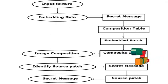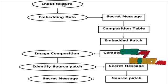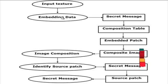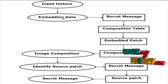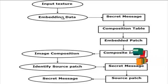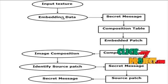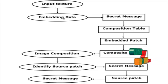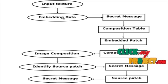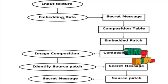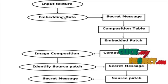Let me discuss the flow of the process. The input texture is obtained and the embedding process is employed. The secret image is placed in the source patch using Discrete Cosine Transformation. The input texture is decomposed using DCT and then the secret information is placed in the low coefficients of the image in the least significant bit of the original data.